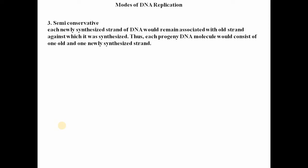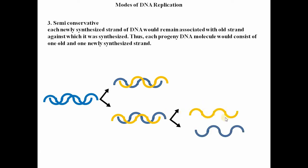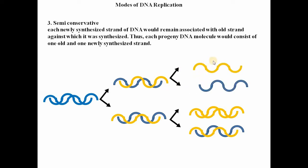The third theory is the semi-conservative mode of DNA replication, proposed by Watson and Crick. According to this theory, the DNA double strand unwinds into two single strands. Each single strand acts as a template, and a new complementary strand is synthesized alongside it. The new strand is indicated in yellow.